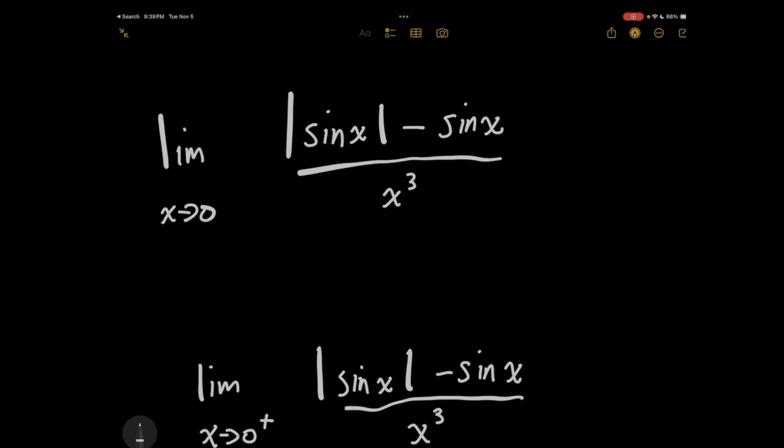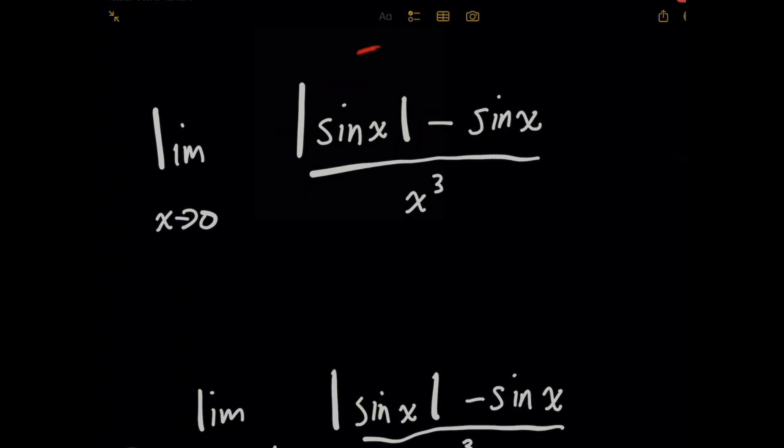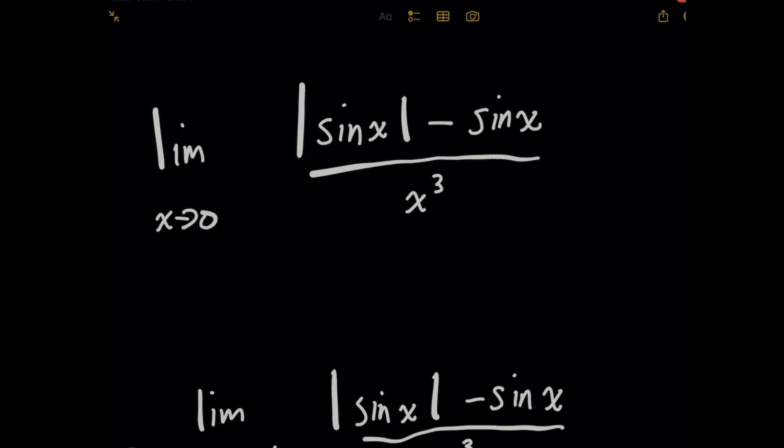For this limit problem here, notice that you can't use a cool trick like L'Hopital's rule, because for the absolute value of sine of x, how are you going to take the derivative of that at x equals zero? It's not differentiable. So maybe we need to use a longer method that's not ideal, but we're going to get through it.